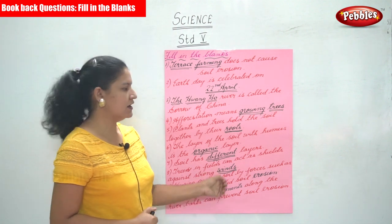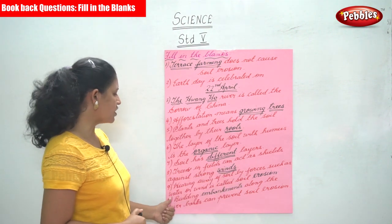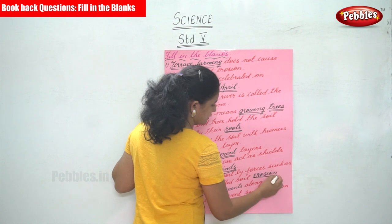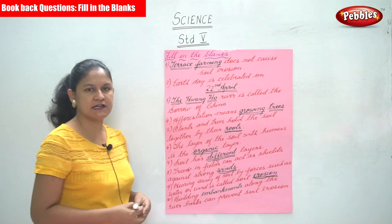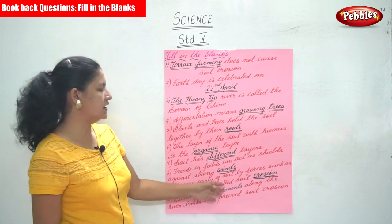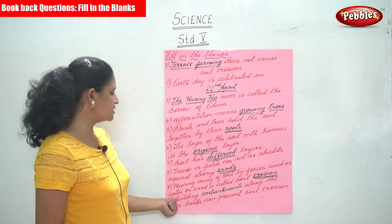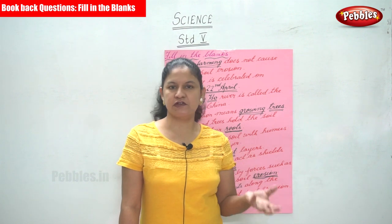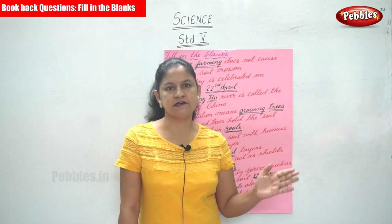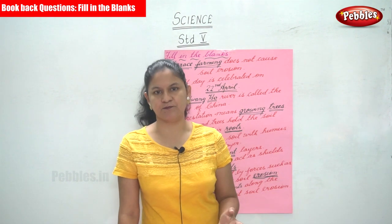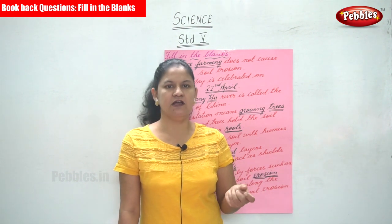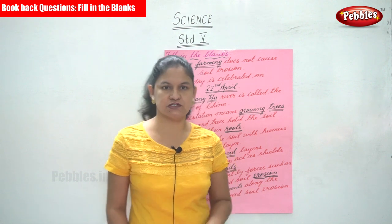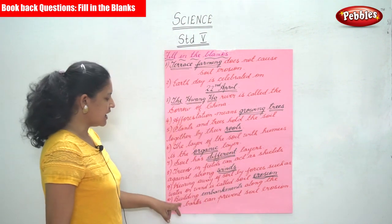The next fill in the blank: the meaning of soil erosion is the wearing away of soil by forces such as water or wind, which is called soil erosion. The impact of every rainfall or strong winds carries away the soil along with them, and this wearing away of soil by forces such as wind and water is known as soil erosion.